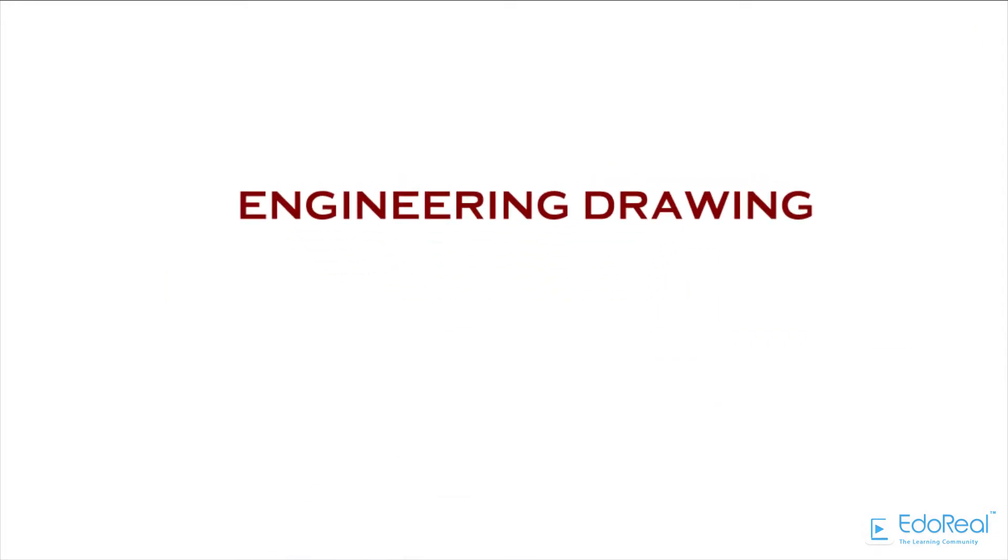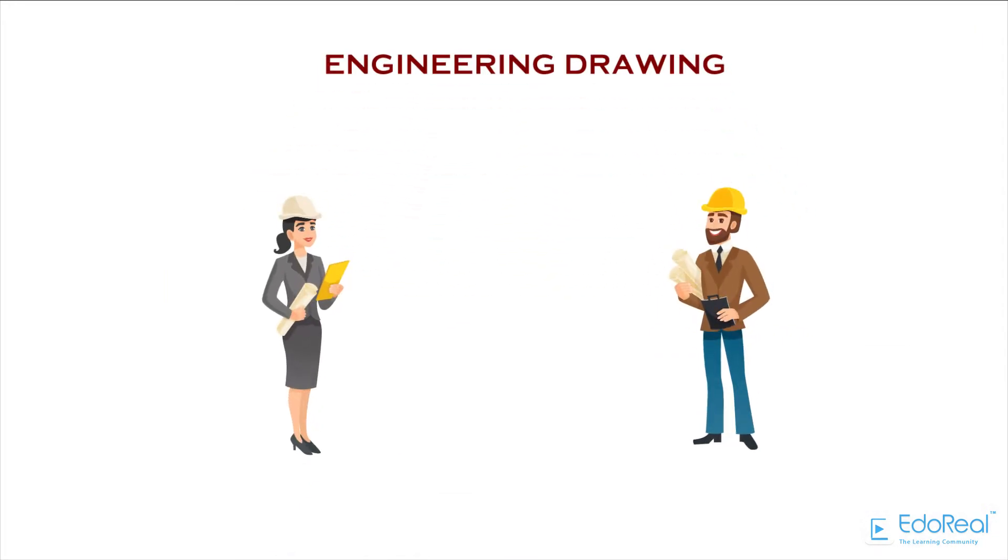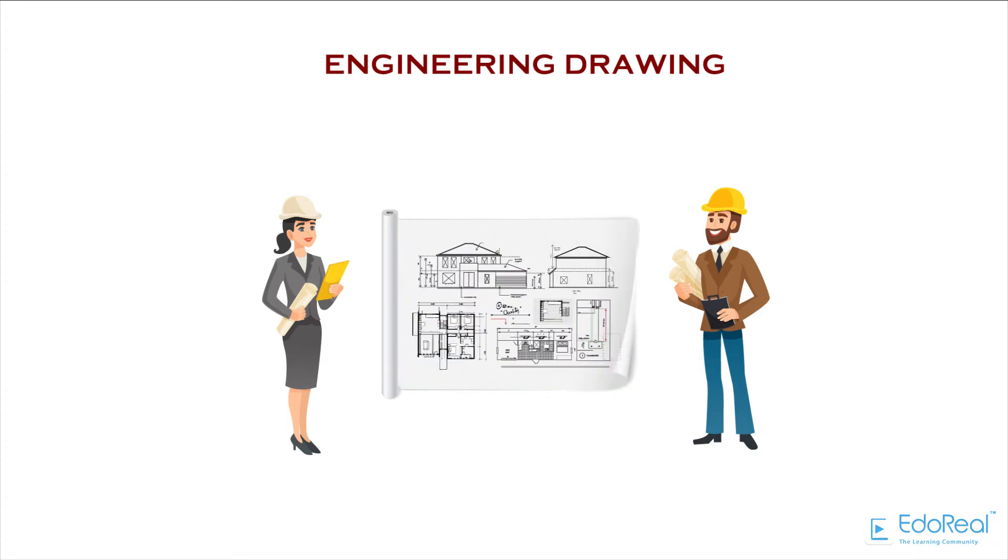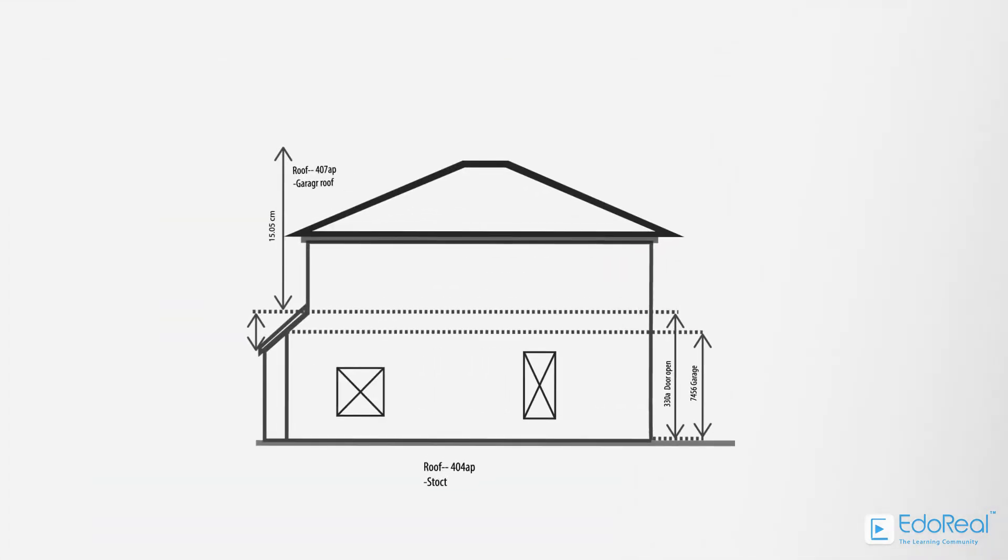An engineering drawing is a type of technical drawing used to fully and clearly define requirements and capture all the geometric features of a product, such as dimensions, for engineering products.